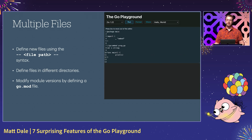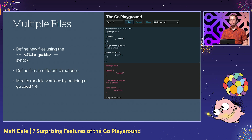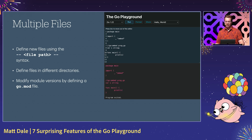Another cool trick is to use the embed package to read files from the build environment. In this example, we are reading and printing the prog.go file, which contains the source code of the example in our Go Playground.